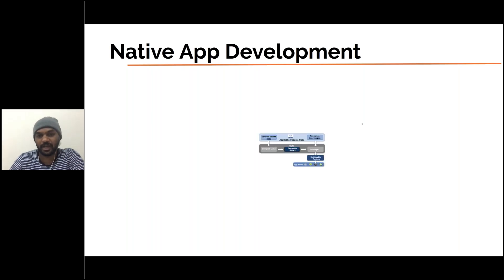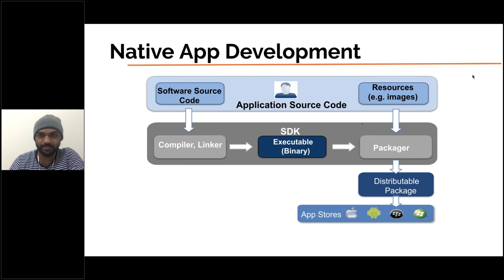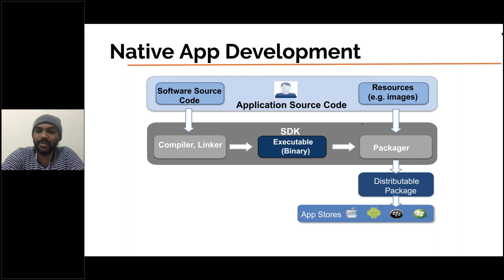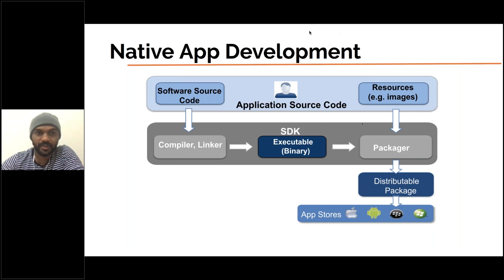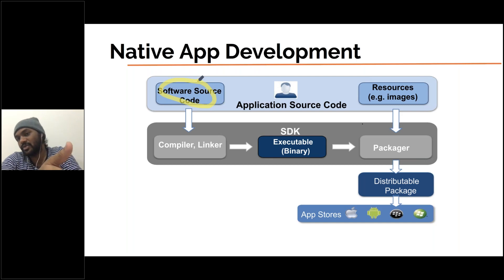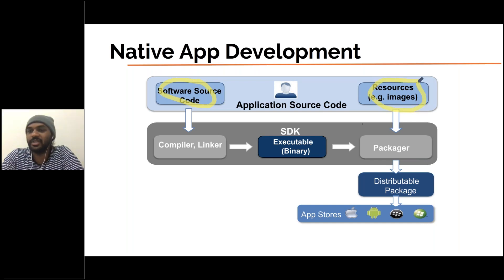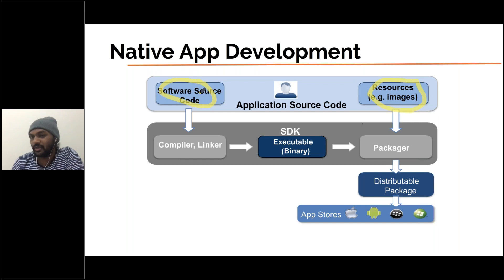How does native application development happen? Consider native app development overall. There is source code — whatever code you implement, corresponding to your language. For an iOS app, you have iOS code; for Android, Android code. You also have resources like images, font files, file systems. Source code and resources go to compile and link, then pass to the SDK — the Software Development Kit — where all the API calls and methods are. The SDK generates a binary file, linked with images, and creates a distributed package.